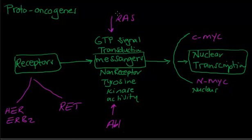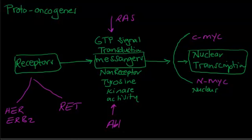So the proto-oncogenes are: RET and HER/ERBB2 receptors, responsible for receptors; RAS, responsible for GTP signal; ABL, for non-receptor tyrosine kinase activity. Then two nuclear proto-oncogenes — C-Myc and N-Myc — while the rest are non-nuclear.